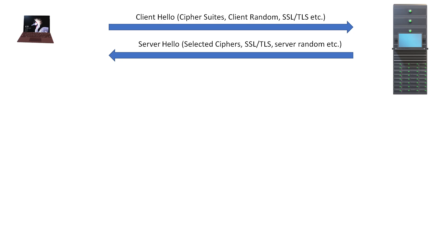The server will select the algorithm that was shared from the client, and it will also share the SSL/TLS version. Additionally, the server will share its own random value — the server random.